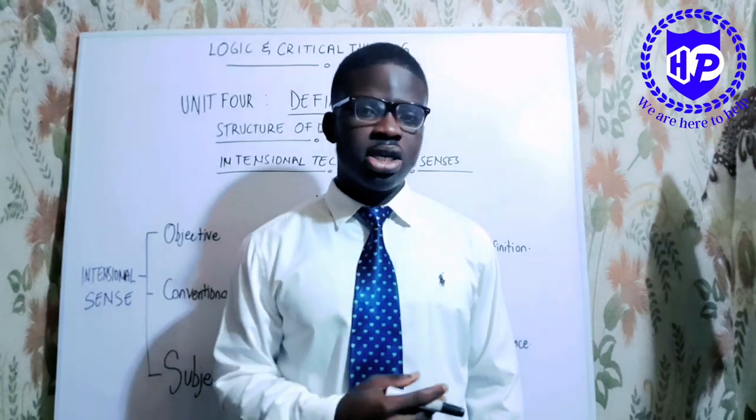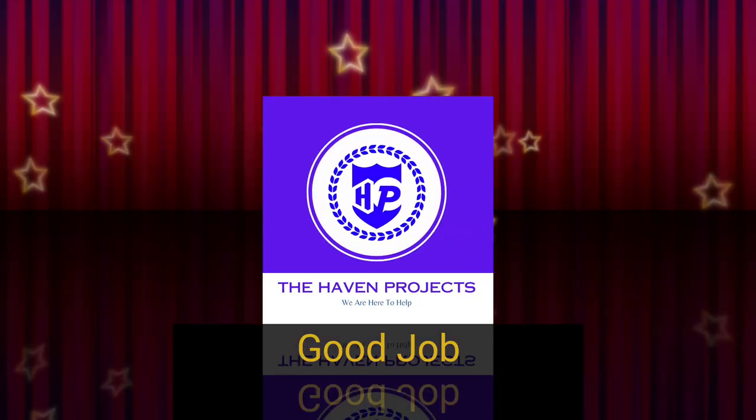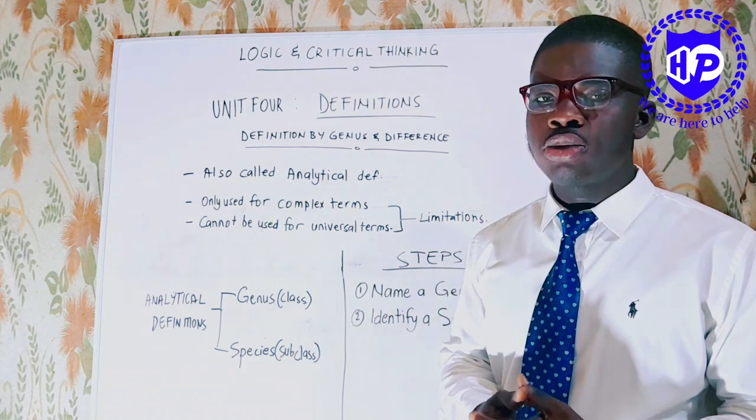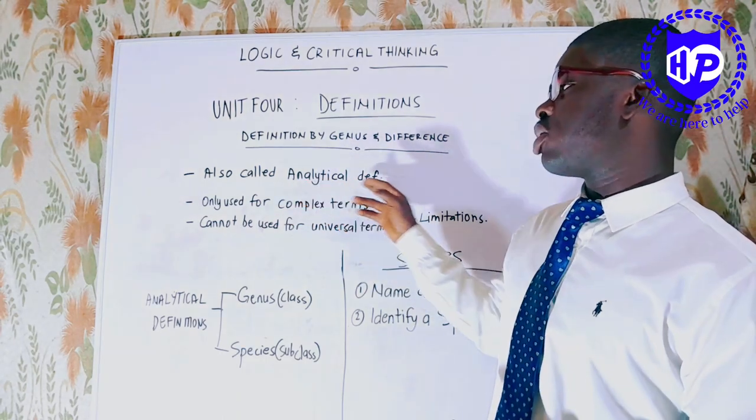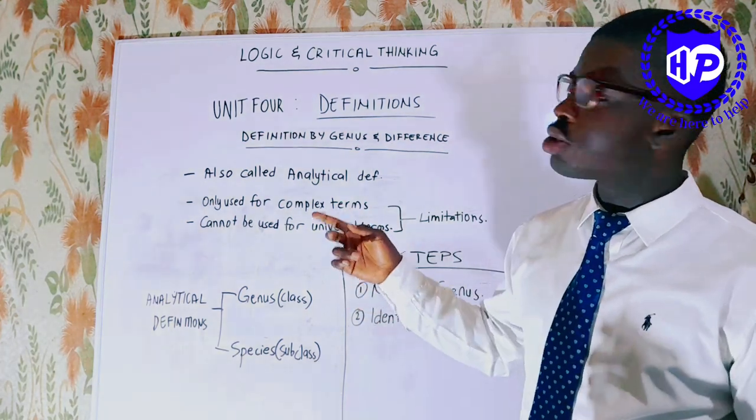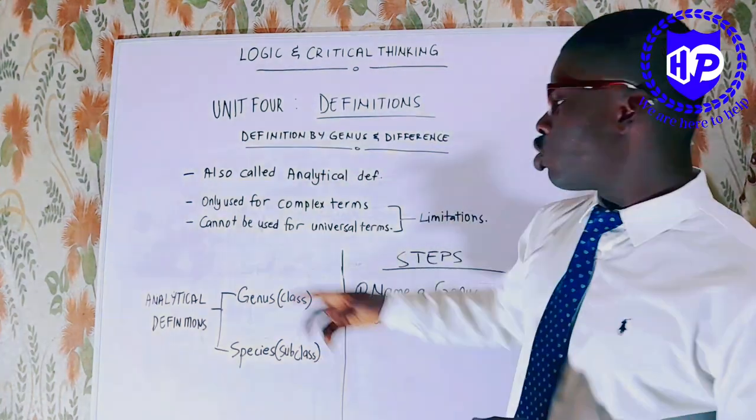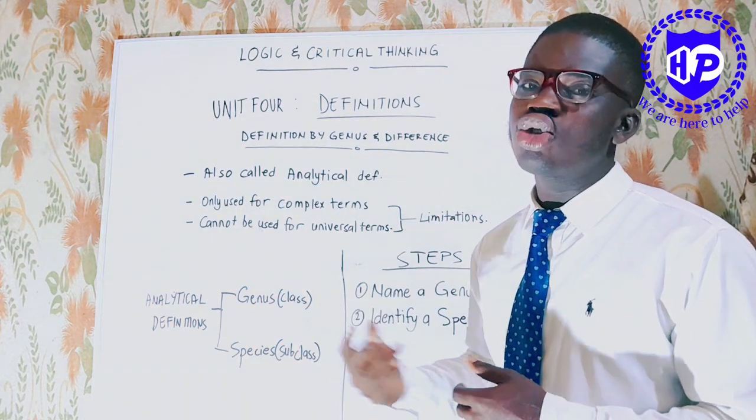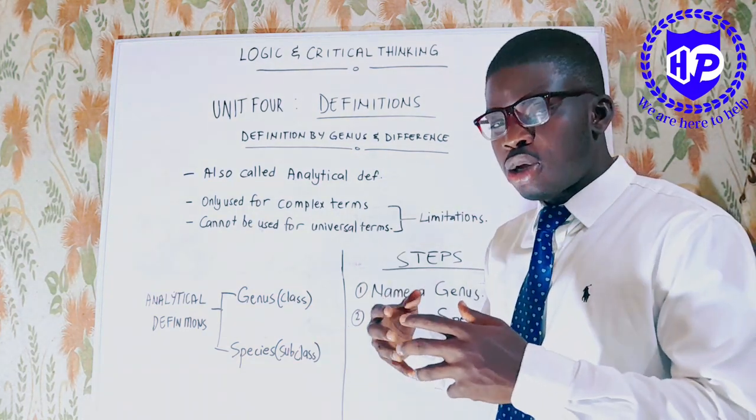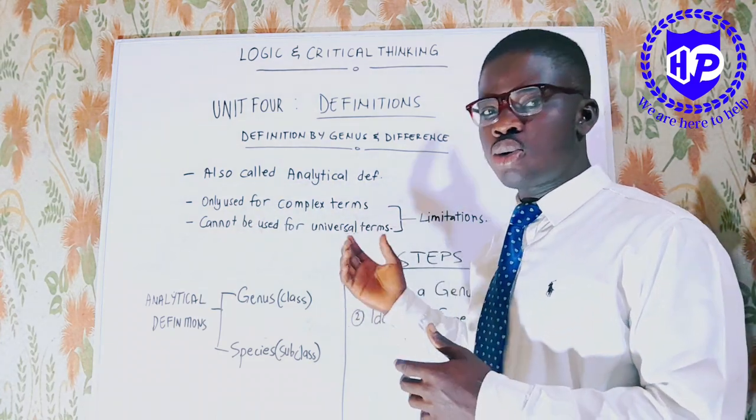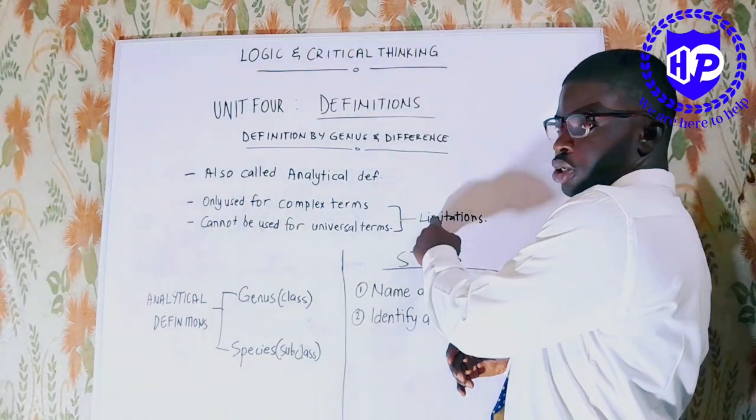So let's take a look at definition by genus and difference. Our last part: definition by genus and difference. One thing we need to know about definition by genus and difference is that they are also called analytical definitions. So from here out, I'll be saying analytical definitions. It refers to definition by genus and difference. The analytical definitions can only be used for complex terms that have more than one or more than two attributes. The attributes that the term is referring to are multiple. And they cannot be used for universal terms. So these are limitations.